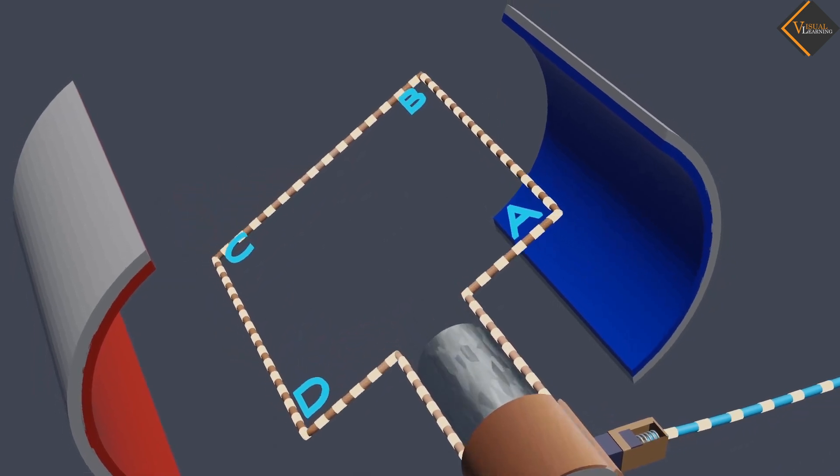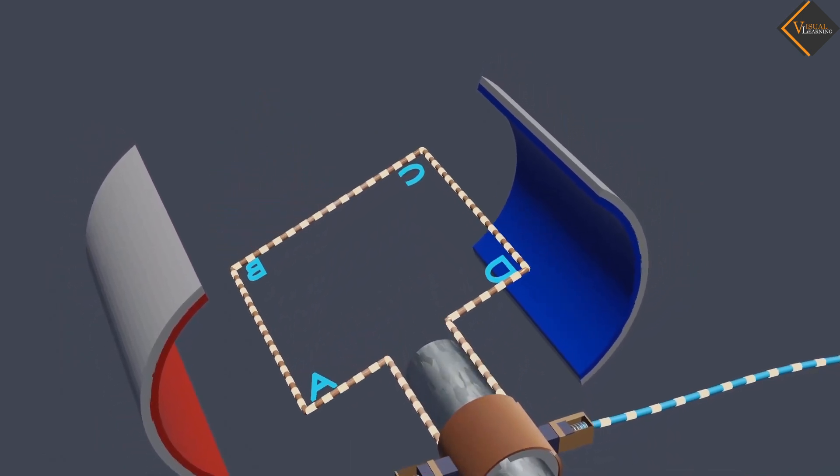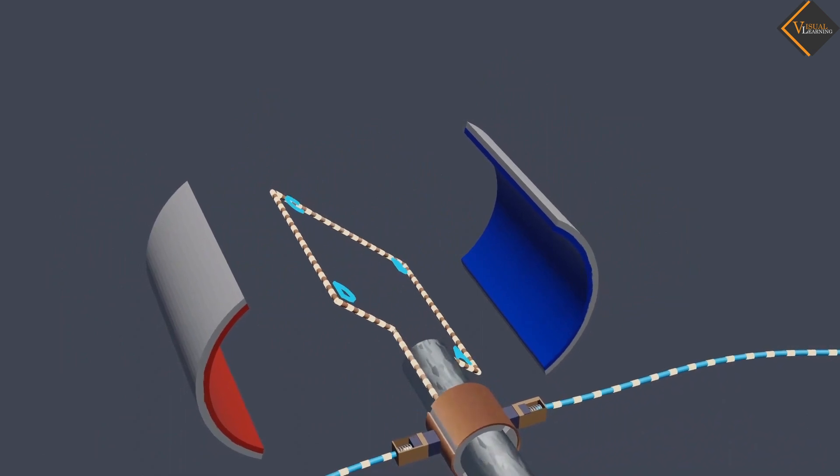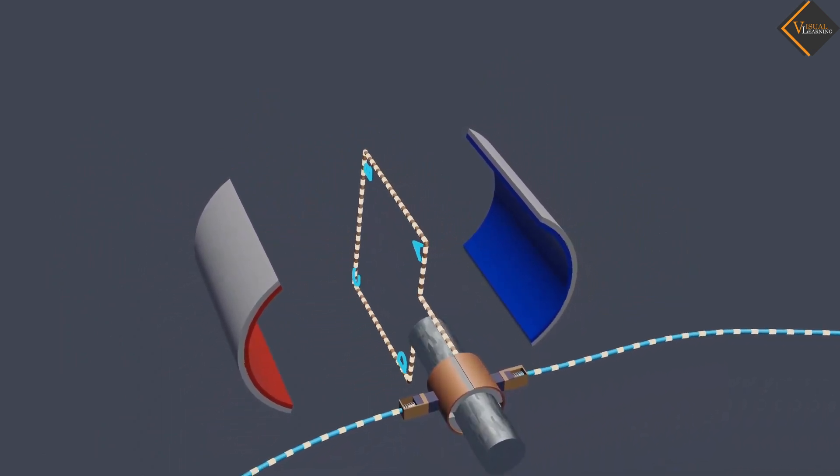Therefore, the coil and the axle rotate half a turn more in the same direction. The reversing of the current is repeated at each half rotation, giving rise to a continuous rotation of the coil and the axle.